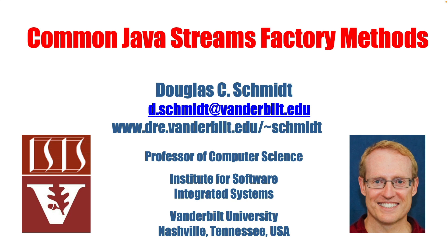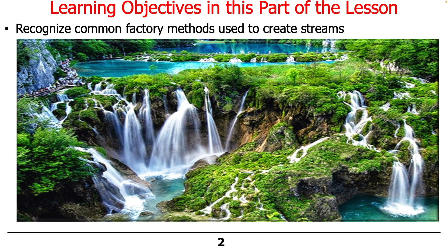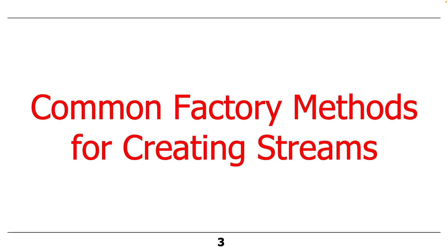Now that we've talked a bit about the simple search stream example, let's take a step back and look more broadly at the types of operations that can appear in a stream. We'll use the simple search stream example to motivate the discussion, but we're going to talk more broadly about the types of methods. We're going to start by talking about some of the common Java streams factory methods, which we've touched on before, and look at them in more detail here.